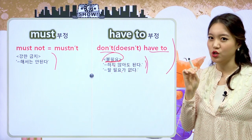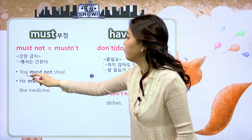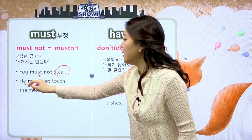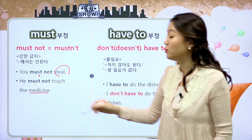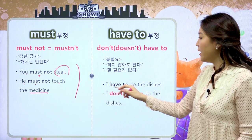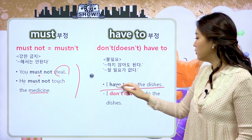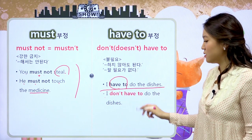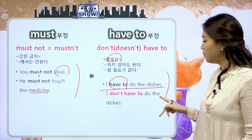차이점 보셨나요? must의 부정은 강한 금지 — 뭐뭐 절대로 해서는 안 된다라는 뜻이라면 don't have to는 금지라기보다는 굳이 하지 않아도 돼라는 불필요의 뜻을 가지고 있어요. 훨씬 그 강도가 약하죠. 예문: 'You must not steal' 하면 너는 절대로 남의 것을 훔쳐서는 안 돼. 'He must not touch the medicine' 하면 그는 절대로 그 약을 만지면 안 돼. 'I have to do the dishes'의 부정은 'I don't have to do the dishes' — 나는 설거지를 굳이 하지 않아도 돼, 할 필요가 없다라는 불필요를 나타내는 문장이 됩니다.